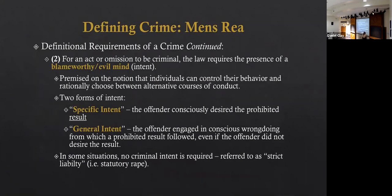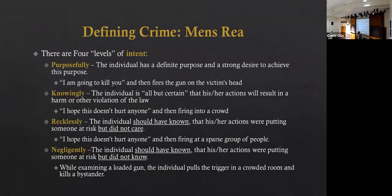Then you have to have the mens rea — the guilty mindset. We talked about specific intent and general intent, and then the four levels of mens rea. In order of most severe to least severe: purposely, knowingly, recklessly, negligently. This will be written in the statute — you'll be able to read it and understand what it actually means.